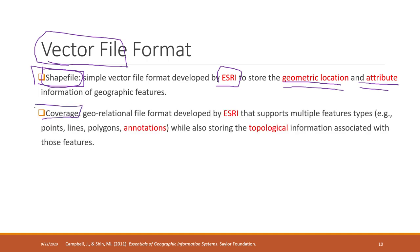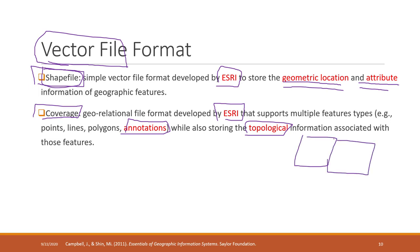The second type is called coverage. Coverage is also developed by ESRI and supports multiple layers like lines, polygons, and annotation functions. Coverage can also store topological information — meaning it records whether two lines or two polygons are neighbors. Coverage is an older format and is not commonly used much nowadays.